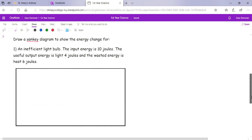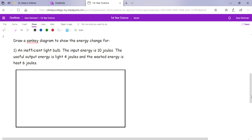So here's the question. We have an inefficient light bulb. Now remember, efficiency means how good something is at its job. So this light bulb is inefficient and that means it's not very good at its job. The input energy is 10 joules. The useful output energy is light is 4 joules, and the wasted energy is 6 joules. Draw a Sankey diagram to show the energy change for this light bulb.